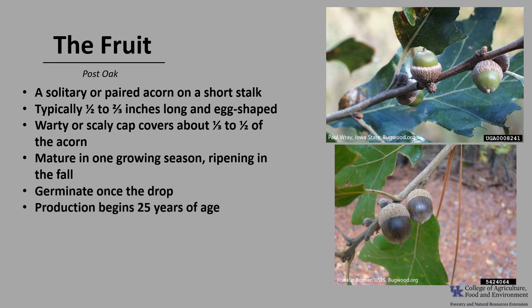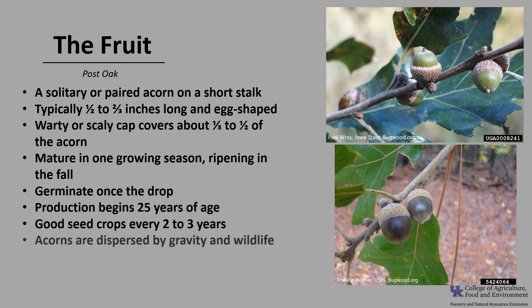Seed production begins around 25 years of age, give or take, and trees have good seed crops every two to three years. Post oak does not produce as many acorns as its associates white oak or black oak, and the acorns are dispersed by gravity and wildlife.